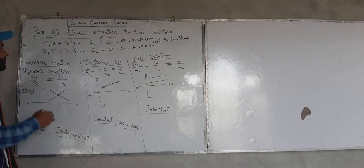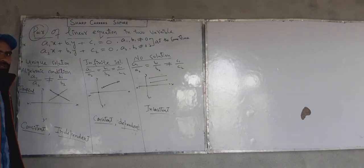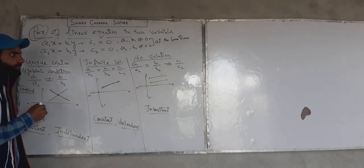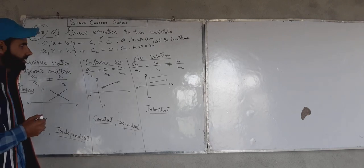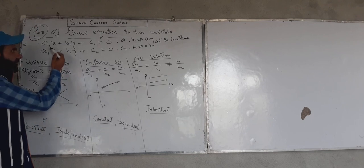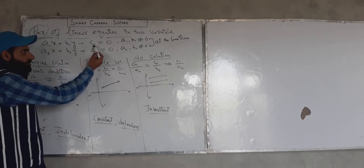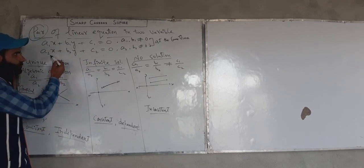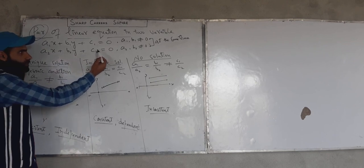As you already know, pair will be two. We have two equations, two linear equations in two variables. The linear equations in two variables are in the form of a1x plus b1y plus c1 equal to 0 and a2x plus b2y plus c2 equal to 0.